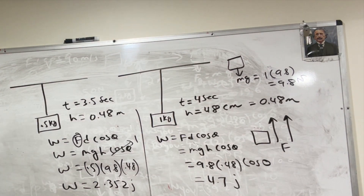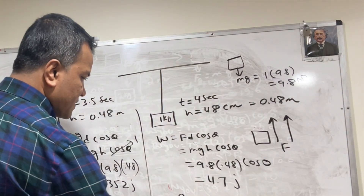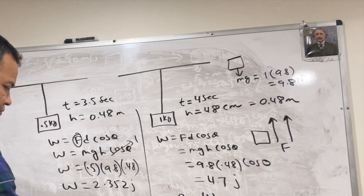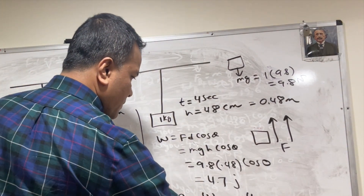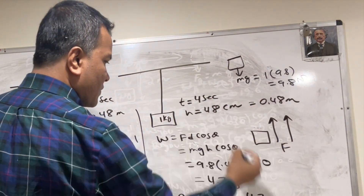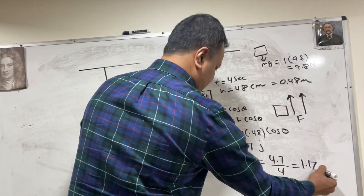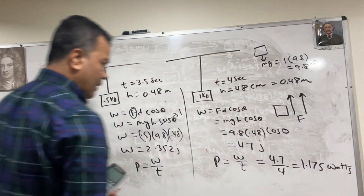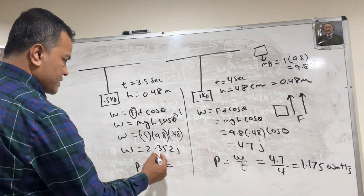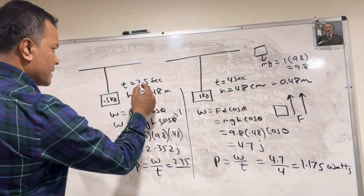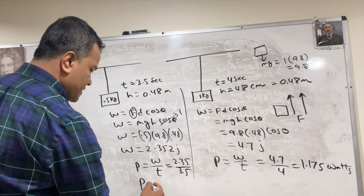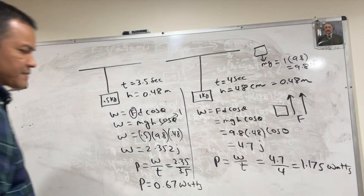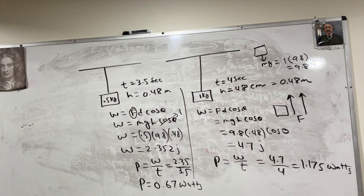Now we want to find the power. Power is W over t. For trial 1: W is 4.7 joules and the time is 4 seconds, giving 1.175 watts. For trial 2: W is 2.352 joules divided by 3.5 seconds, giving 0.67 watts.